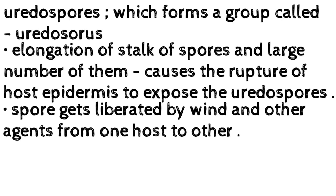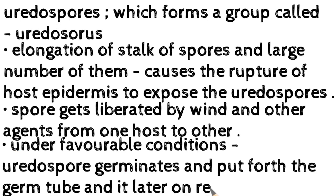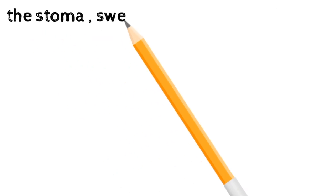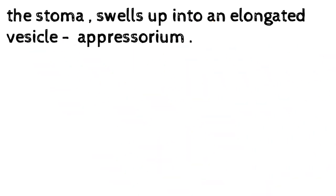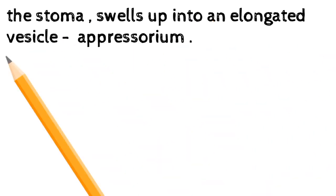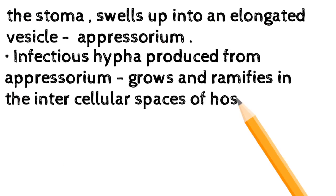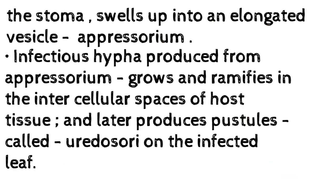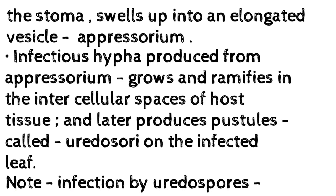Spores get liberated by wind and other agents from one host to another. Under favorable conditions, the uredospore germinates and puts forth the germ tube, which later on reaching the stoma swells up into an elongated vesicle called the appressorium. An infectious hypha produced from the appressorium grows and ramifies in the intercellular spaces of the host tissue and later produces pustules called uredosori on the infected leaf.